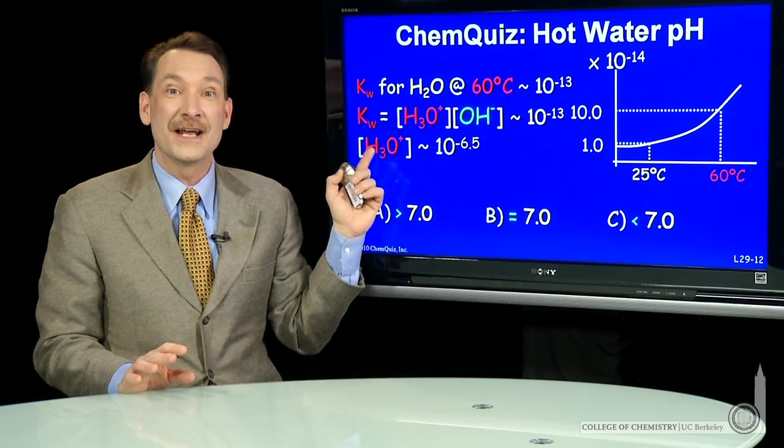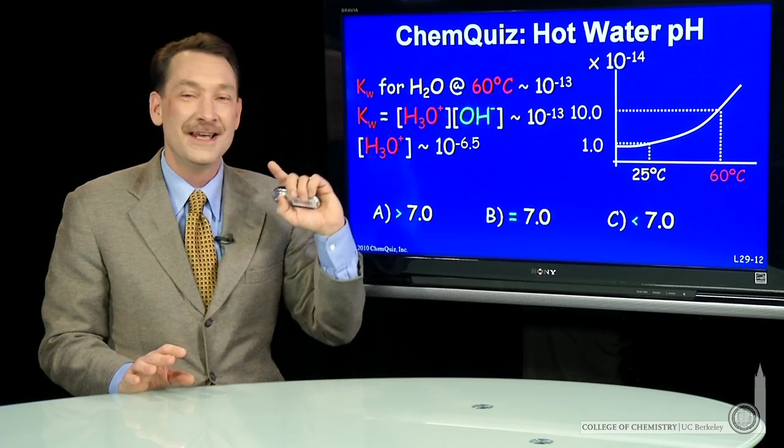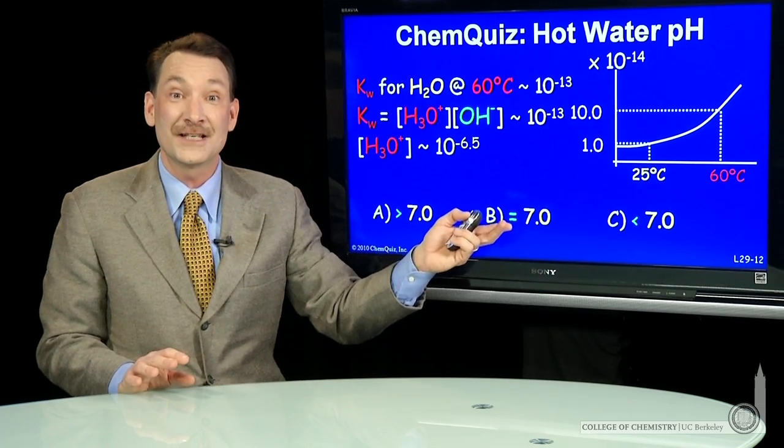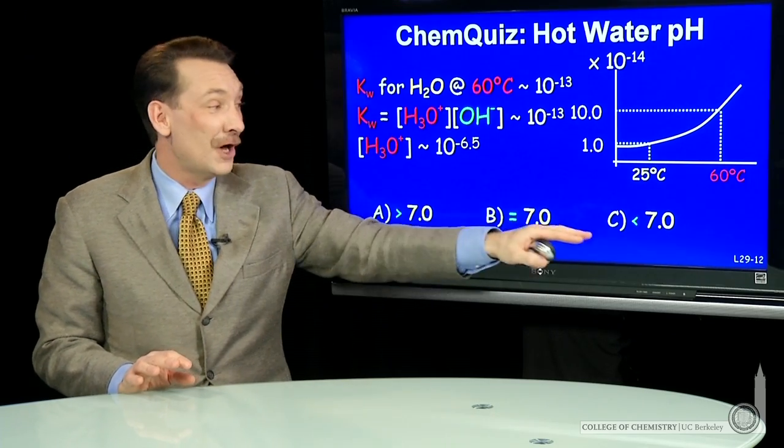So the pH is minus log of H3O plus, so minus log of 10 to the minus 6.5 is 6.5. So the pH in hot water is lower.